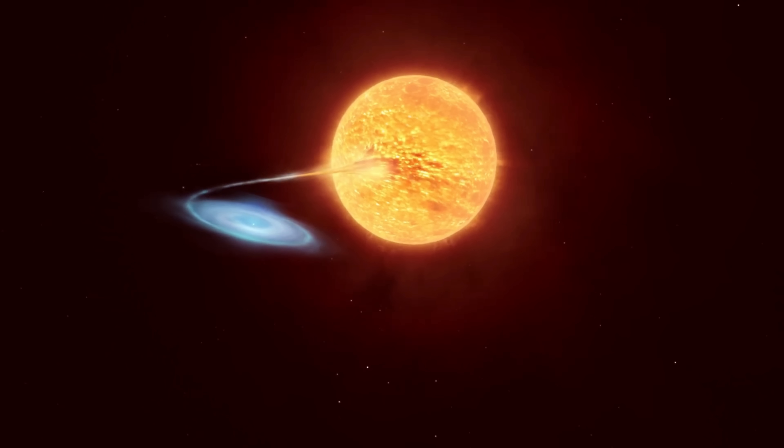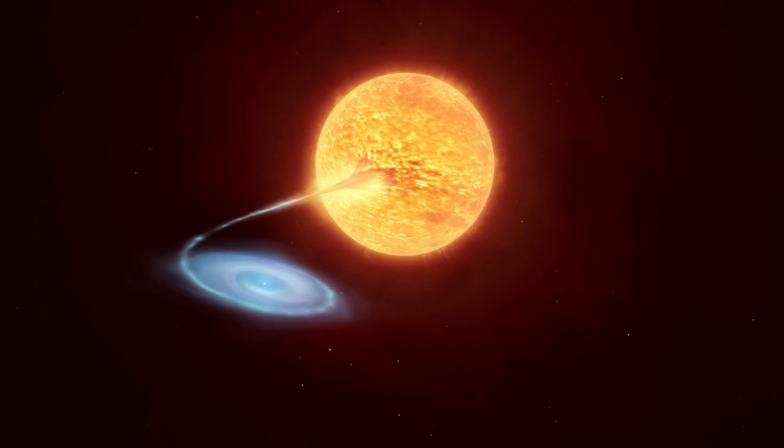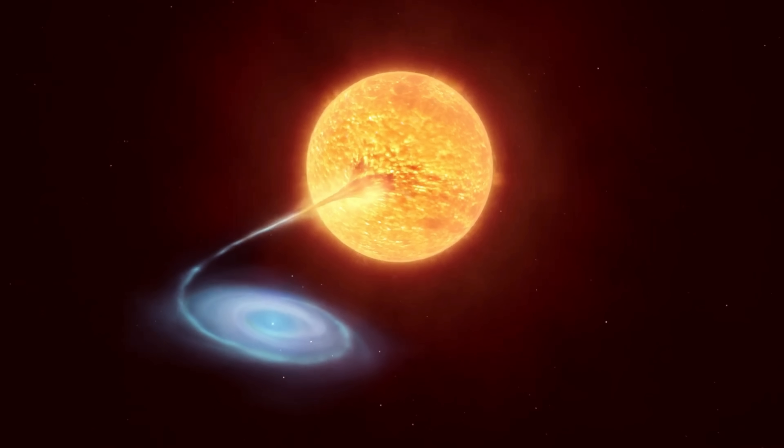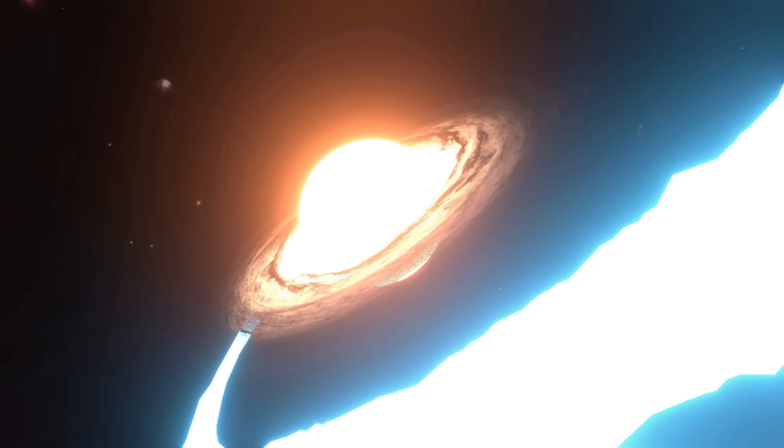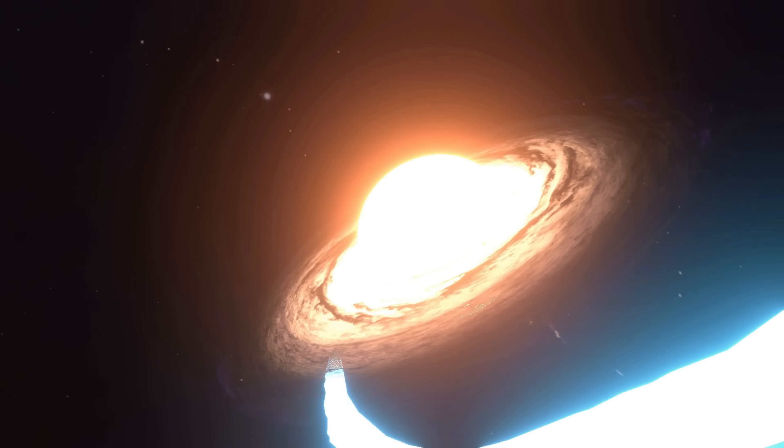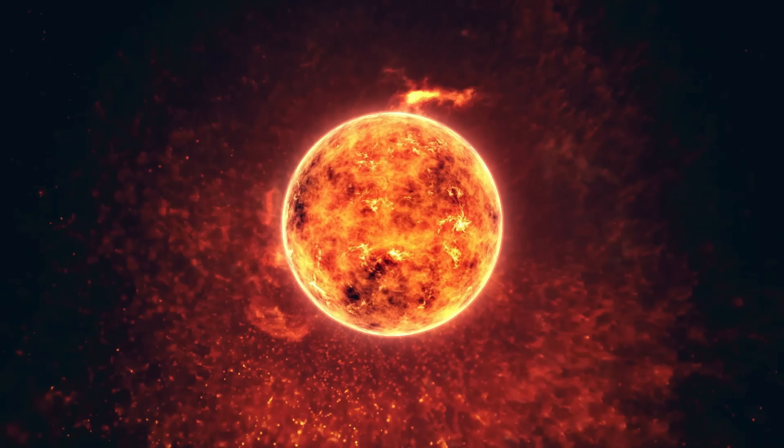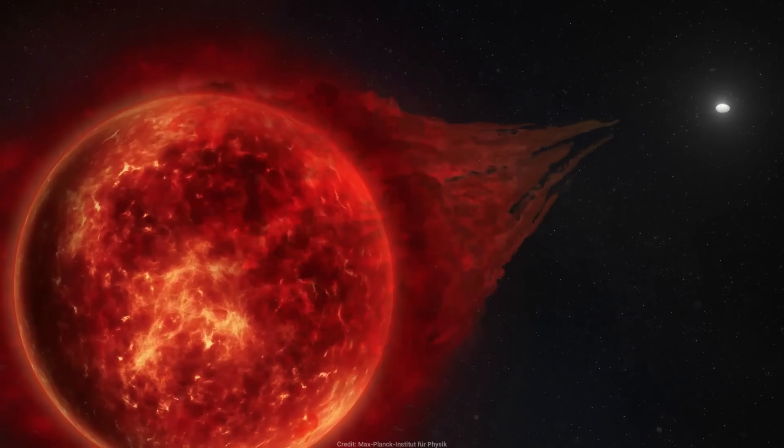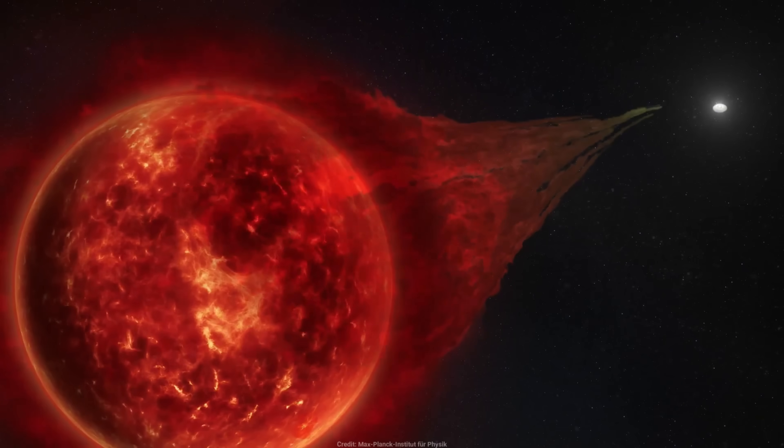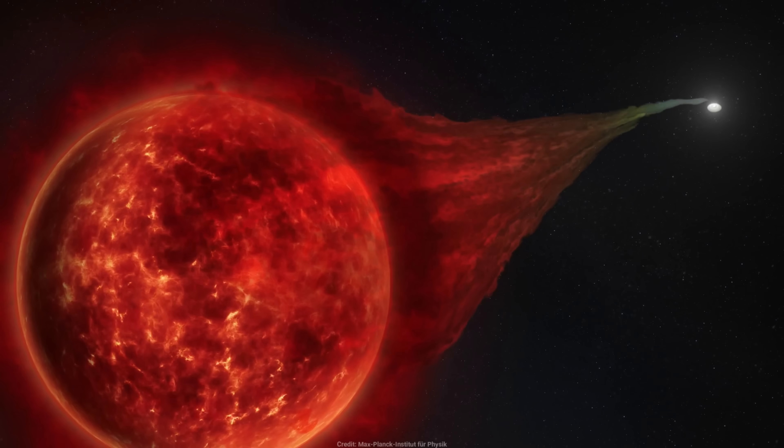The primary star is a white dwarf, a remnant of a once-massive star that has exhausted its nuclear fuel and collapsed into a dense, earth-sized object. This white dwarf, although seemingly quiet, harbors an immense gravitational pull, drawing in material from its companion star, a red giant, bloated and cool, shedding its outer layers as it nears the end of its life. This mass transfer is the critical piece of the puzzle in understanding why T Coronae Borealis is known as a recurrent nova.